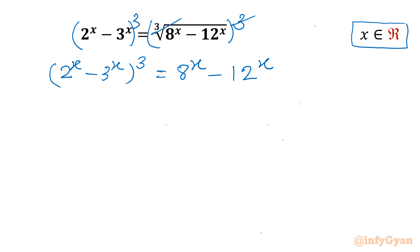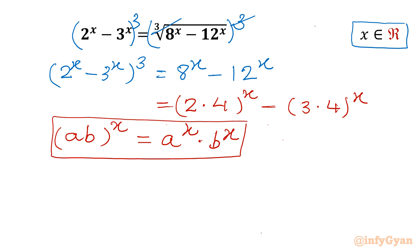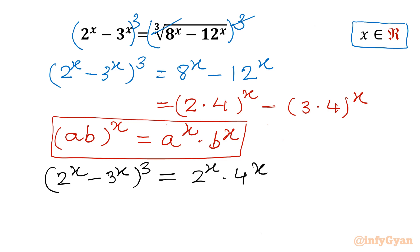Now I can factor the bases 8 and 12. We can write 8 as (2 times 4)^x and 12 as (3 times 4)^x. Using the exponent property (ab)^x = a^x times b^x, our equation becomes (2^x minus 3^x)^3 equal to 2^x times 4^x minus 3^x times 4^x.